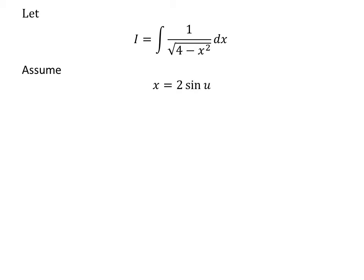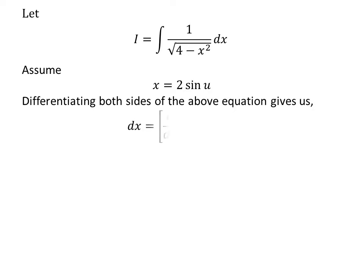To simplify this integration, let us apply the substitution method. Assume x is equal to 2 times sine of u. Let us find the value of the differential of x in terms of u. Taking the differential of both sides gives us differential of x is equal to 2 times cosine of u times differential of u, since the derivative of sine of u is cosine of u.